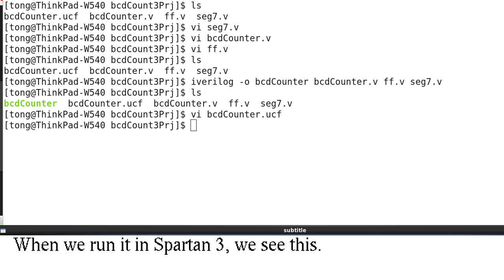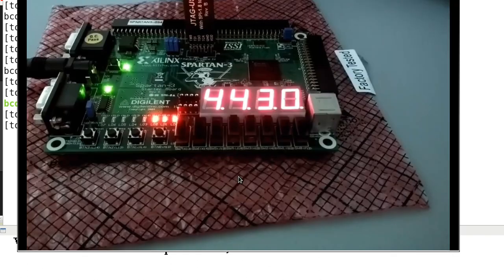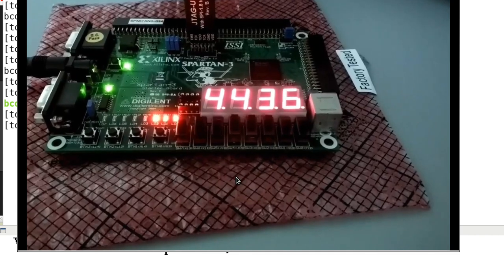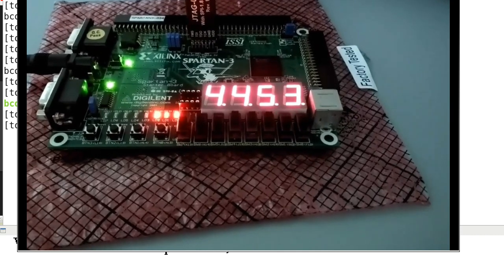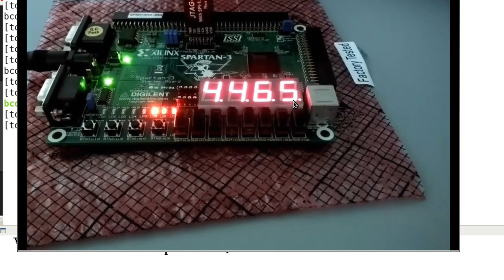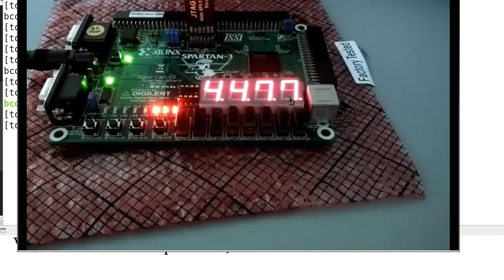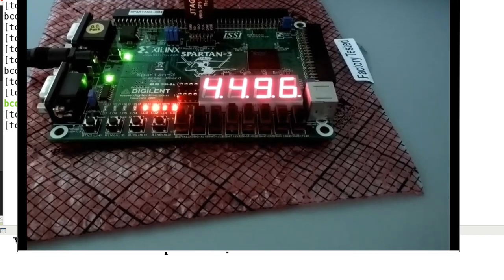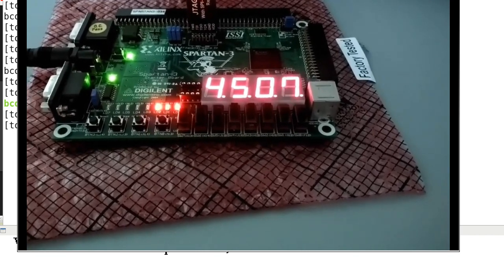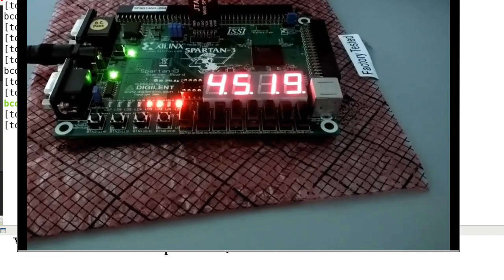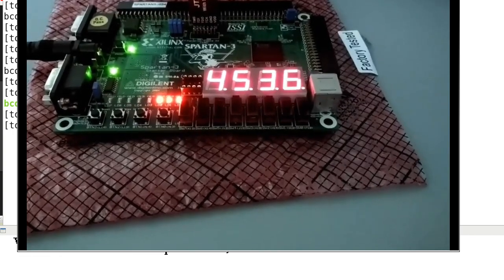Now we have run this code on Spartan 3. We can see this. So we can see that it counts. And this counts to 10, it triggers the next digit, it counts up 1. And then this up to 10, it triggers it to count up 1 also. So this is how you use multiplexing to display all the 4 digits.